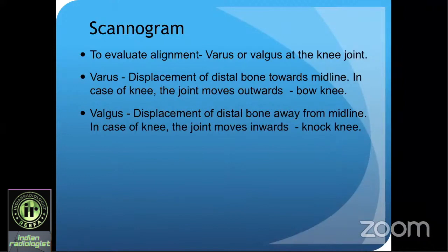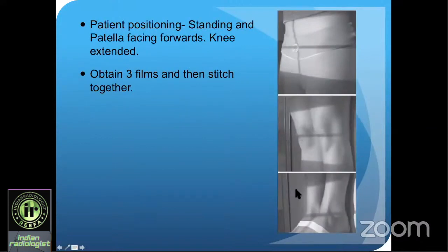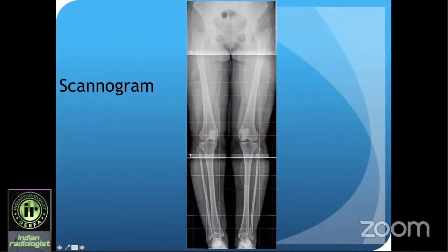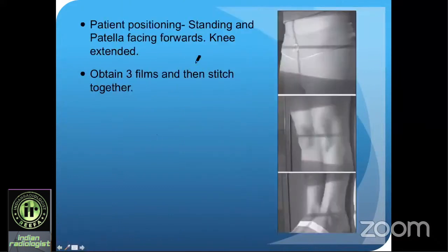A scanogram is done to evaluate alignment — whether a patient has valgus, varus, or neutral alignment. Varus is where the distal bone goes away from the midline, meaning bowed knees. Valgus is where the distal bone comes toward the midline — knock knees. Three X-rays are taken and stitched together. A very important point: the patella must be facing forwards when taking the X-ray. Tell your technician this, because if the patella is not facing forwards, a neutral alignment X-ray may appear as malalignment and the patient could land up with the wrong surgery.